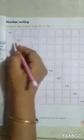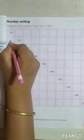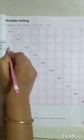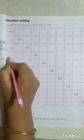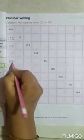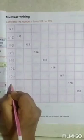101. What comes after 101? It is 102. Then 103, 104, 105, 106, 107, 108, 109, 110. So here 111 will come.